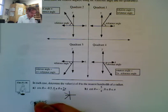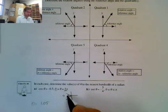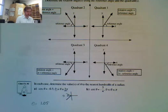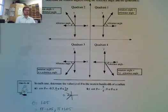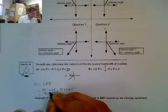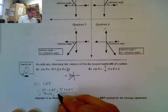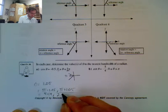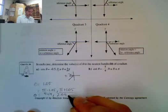Now I find the other angles. Remember this is π, so I calculate π minus 1.05 and π plus 1.05. π minus 1.05 gives approximately 2.09, and π plus 1.05 gives approximately 4.19. So my two solutions are 2.09 radians and 4.19 radians.